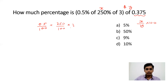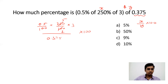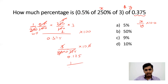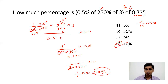So 0.5% is 0.5/100, and we replace 'of' with multiplication. It becomes (0.5/100) × (250/100) × 3, all divided by 0.375, then multiply by 100. Simplifying step by step: you get 1/200, cancel to 1/40, then 3/80. Then 3/80 × 0.375 × 100 simplifies to 0.125, giving 1/8 × 0.125 × 10. Since 8 × 0.125 = 1, the result is 1 × 10 = 10%. So the answer is 10%.